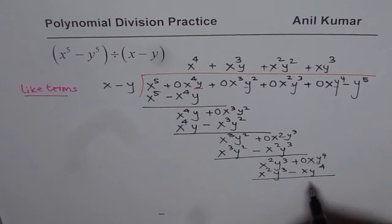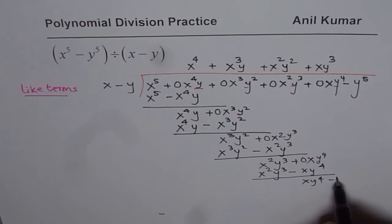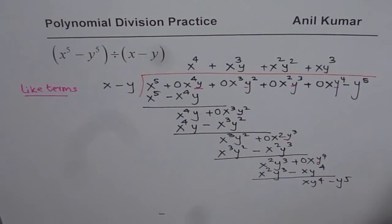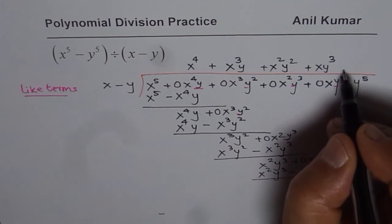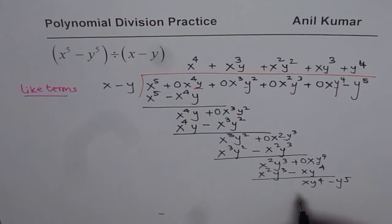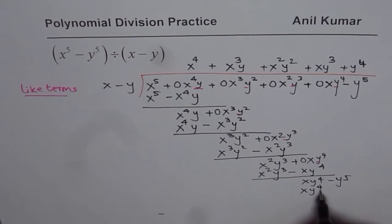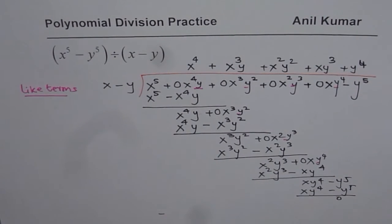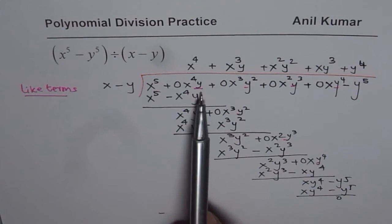We'll introduce y to the power of 4 in both places, no harm. Now we get xy to the power of 4, bring down minus y to the power of 5. This time we need to multiply by y to the power of 4. We get xy to the power of 4 minus y to the power of 5, and finally the remainder is 0.